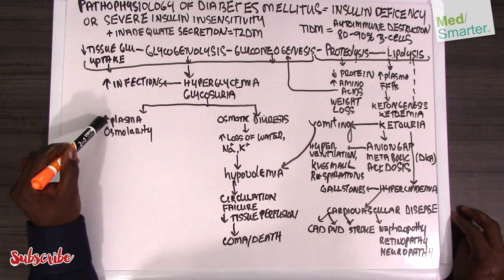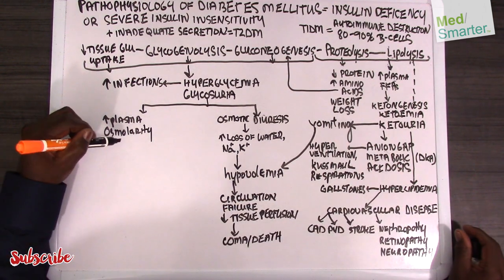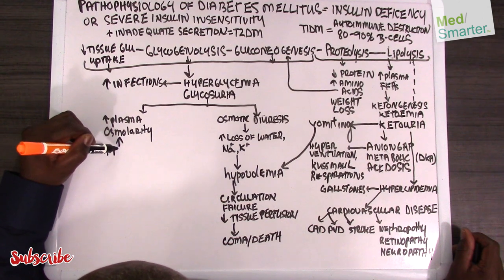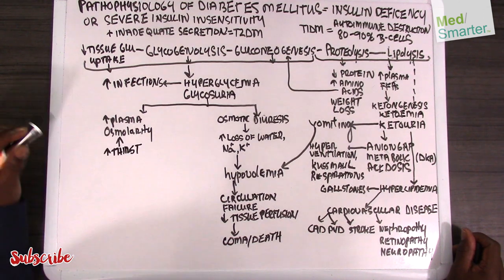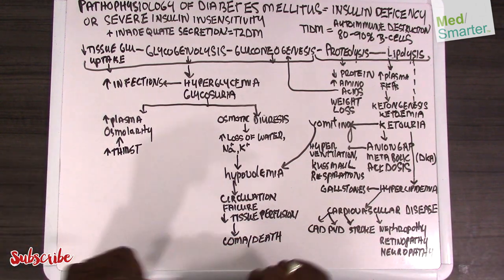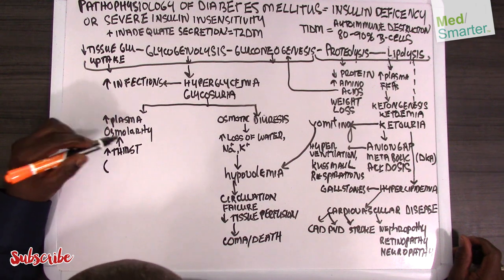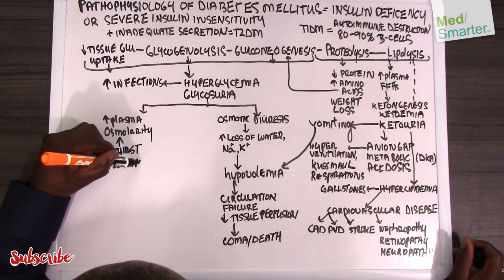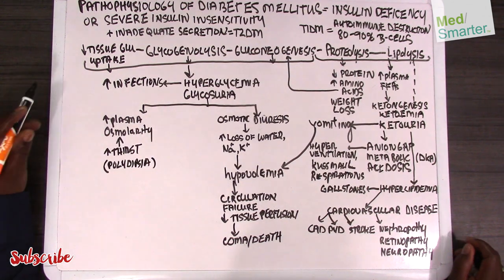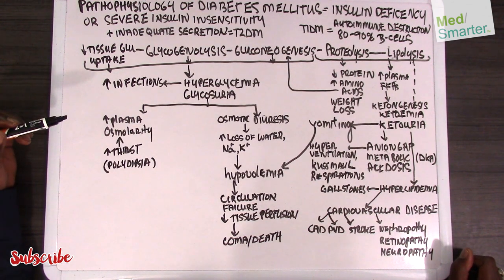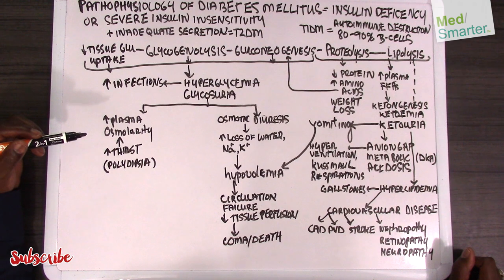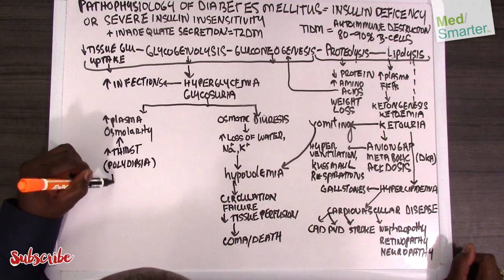The hyperglycemia is going to result in an increase in plasma osmolarity. That increase in plasma osmolarity is going to result in an increase in thirst — and so that increase in thirst is where your polydipsia comes in. As a result of that polydipsia, along with the increased osmotic effect from the elevated plasma sugar, there will be polyuria.